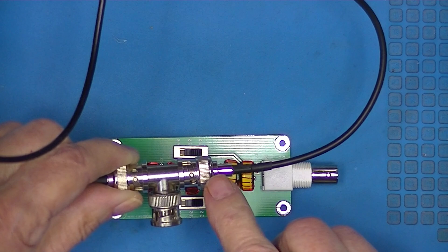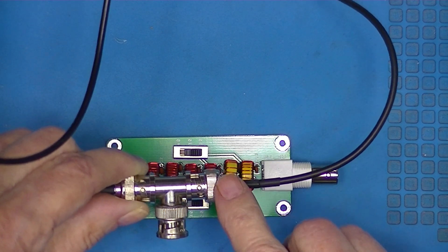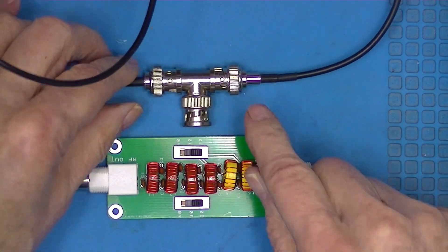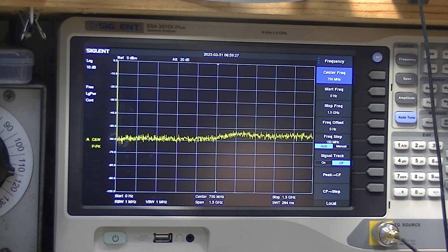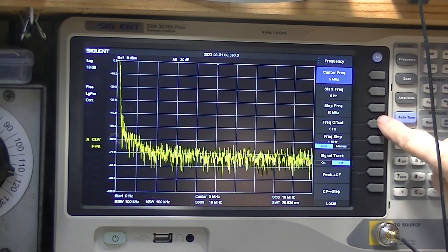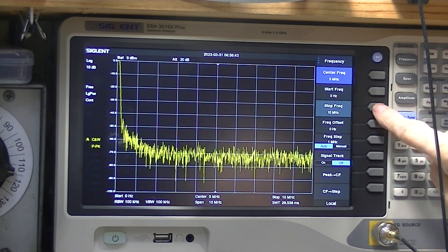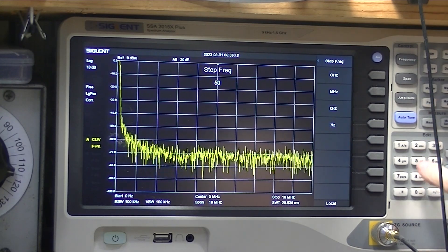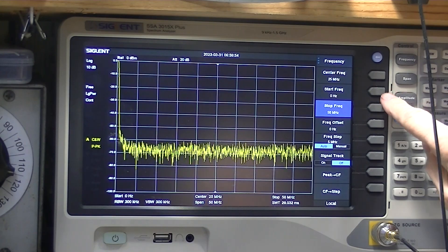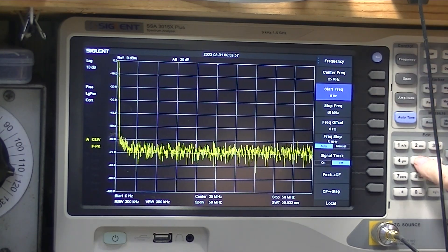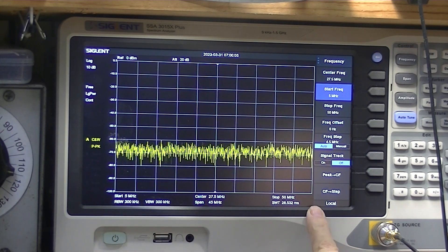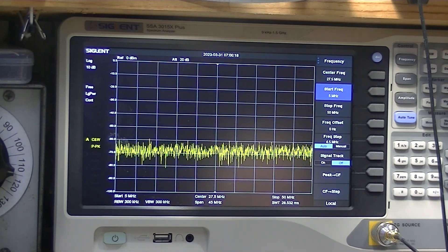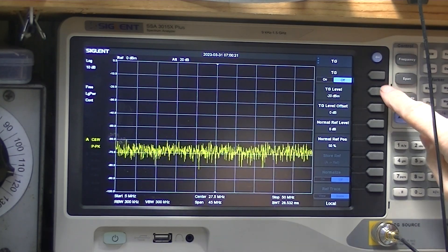I've got them connected through the T. I'm going to reset the tracking generator to its factory position, a stop frequency of 50 megahertz. So we're sweeping from 5 to 50 megahertz.